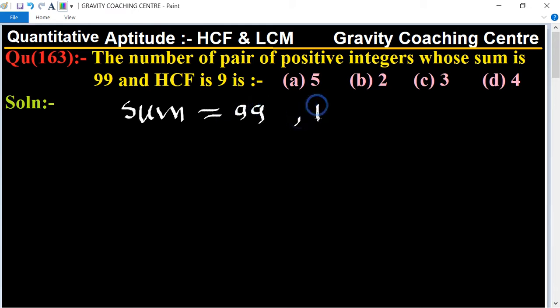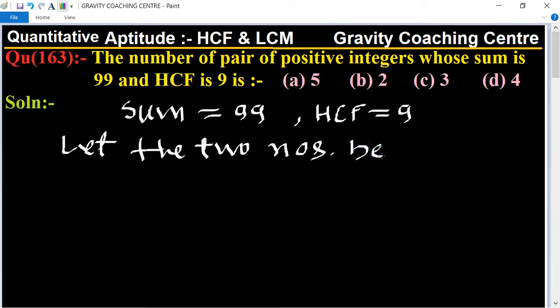So we let the two numbers be 9x and 9y. And according to the question, the sum of the numbers is 9x plus 9y equal to 99.